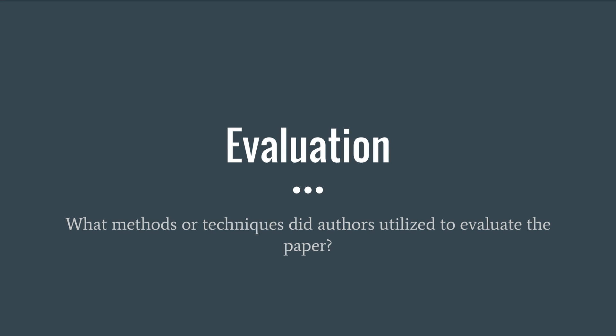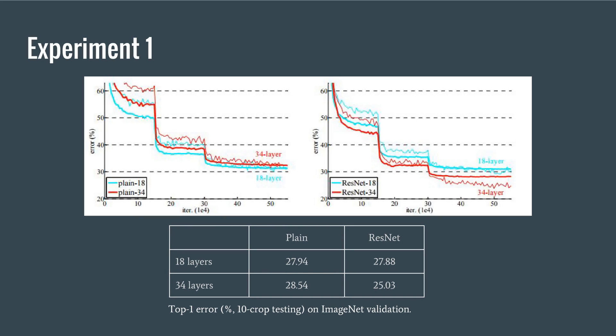Let's find out some methods used by authors for evaluation. The authors trained plain and residual nets, each 18 and 34 layer CNNs. The error increases for plain networks when depth is increased from 18 to 34, while it reduces in residual nets with increased depth. Error rate of ResNet is lower than plain net.